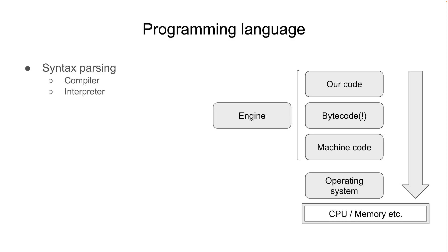Python is an interpreted language. So what it does — if we have 100 lines of code, when we run it, the Python engine will execute the Python code line by line. On the other hand, Java does not execute line by line. Instead, the whole code will be compiled first and transferred into a bytecode level.